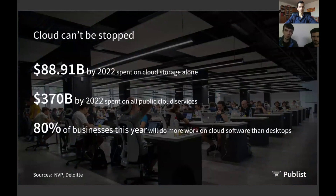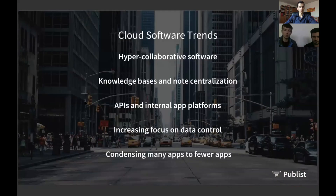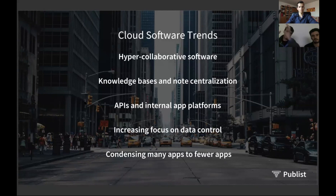Cloud storage alone is an $88.91 billion dollar market, and we'll be spending $370 billion on all public cloud services. We've noticed several trends: hyper-collaborative software, knowledge bases, no-code centralization, APIs, app platforms, increasing data control, and finally condensing apps. People ended up with 10 to 16 applications in the cloud and realized this wasn't a good way to work, so they've started reeling it back.